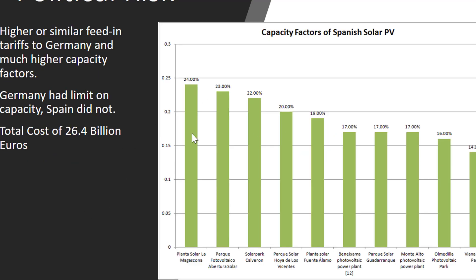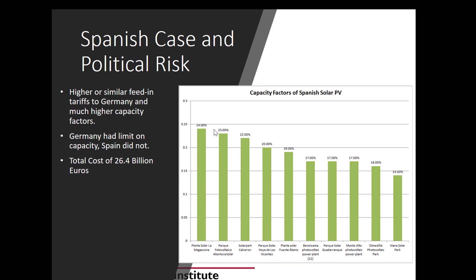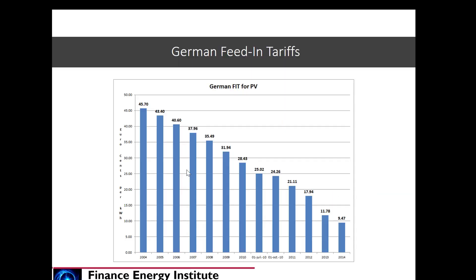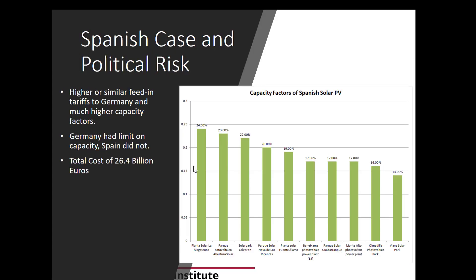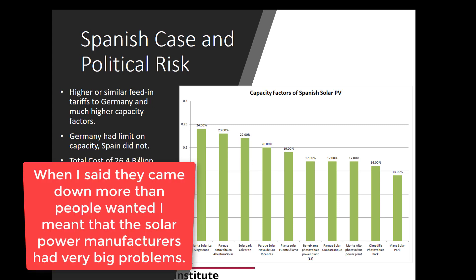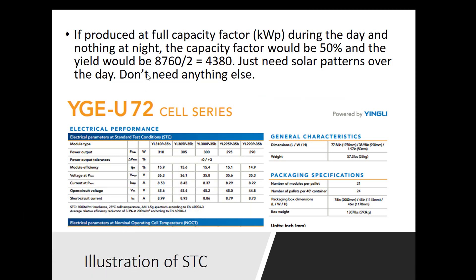You can see the effect of wind and solar: the implied heat rate tumbled — the blue line went below the red line with all this surplus. Now it's a little bit back, but prices are still low. The Spanish case was fascinating — they had even higher feed-in tariffs than Germany. Germany had a limit on capacity, but Spain didn't. They ended up with $24 billion in obligations and then retroactively changed everything.